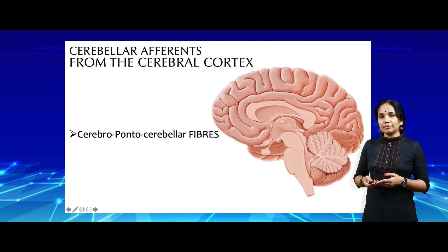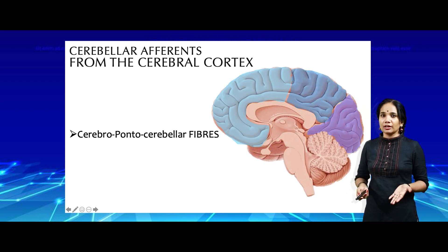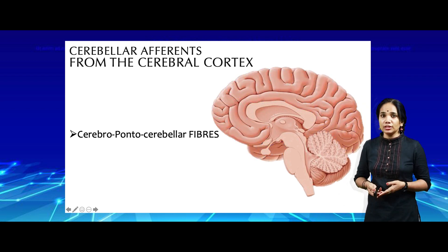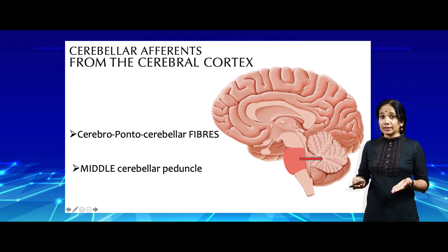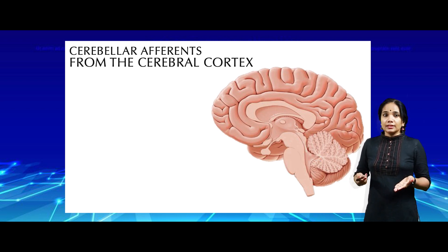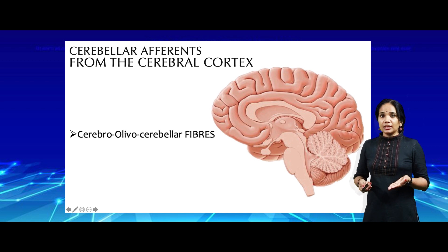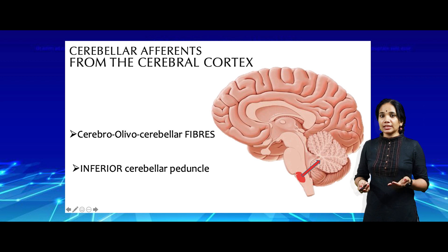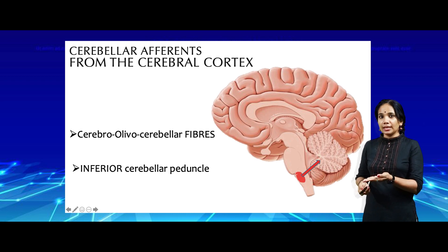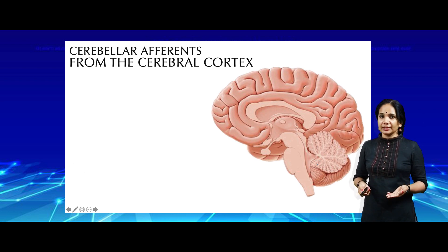The cerebro-ponto-cerebellar fibers start from all parts of the cerebral cortex and converge onto the pons. From the pons they reach the cerebellum via the middle cerebellar peduncle. The next set of fibers are the cerebro-olivo-cerebellar fibers. They too start from all areas of the cerebral cortex but converge in the olivary nucleus located in the medulla, and they reach the cerebellum through the inferior cerebellar peduncle.